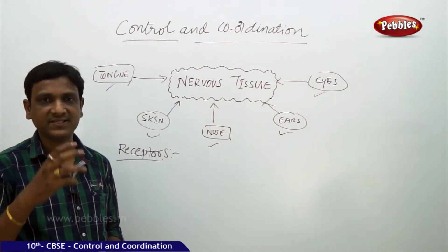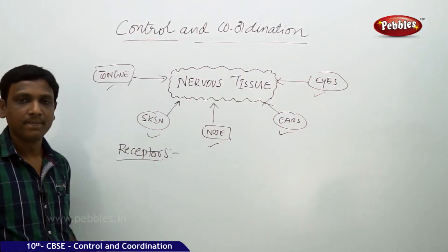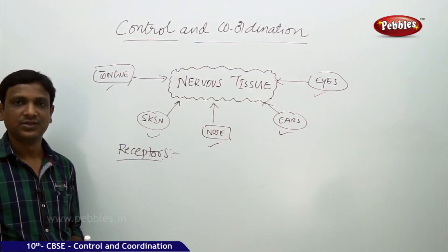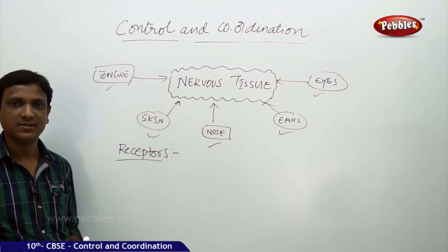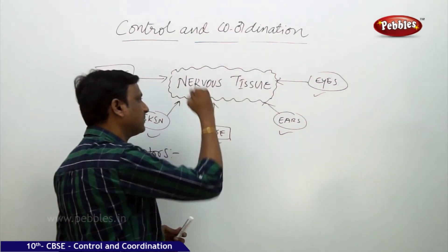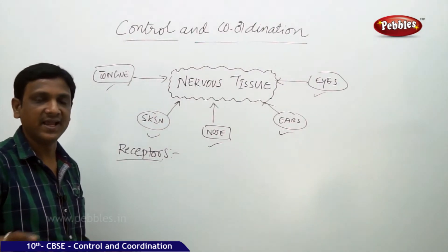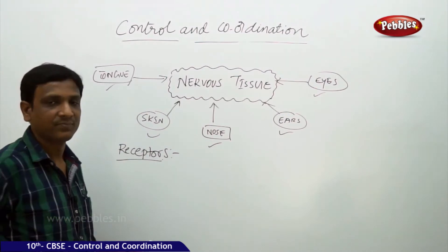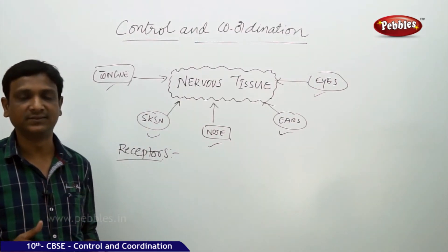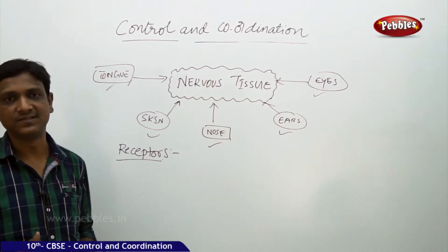So the receptors are also a part of the nervous tissue. The receptors will identify and receive the information. After receiving this information, it is transferred to the processing unit, which is also a part of the nervous system. We now understand how changes in the environment are taken to the nervous system. Let us see what are the various parts of the nervous system and how the information is carried to the processing part.